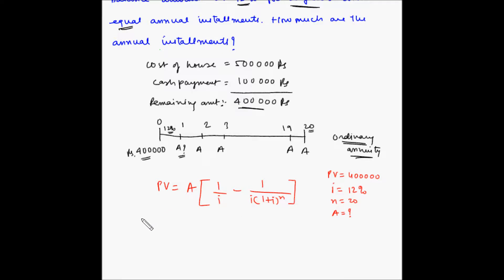So let us plug in these values. Let's bring A on one side and everything else on the other side. So A = 400000 / [1/0.12 - 1/(0.12 × 1.12^20)].